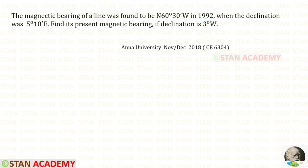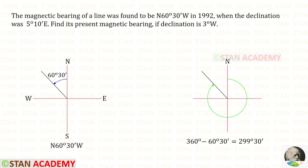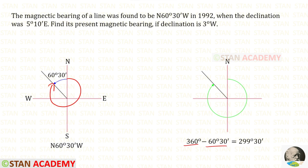The bearing is given in reduced bearing. First we have to convert that into whole circle bearing. This angle is from the north and towards the west. To convert this angle into whole circle bearing, we have to subtract that by 360 degrees, so that we will get 299 degree 30 minutes.